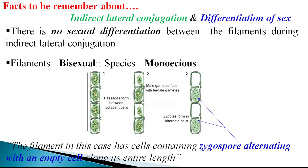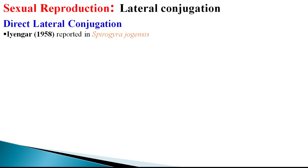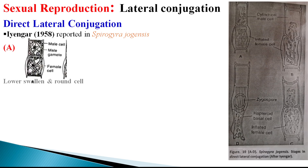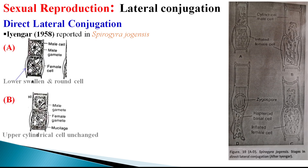Now let's discuss direct lateral conjugation. Professor Ayangar, one of the greatest pioneer workers in Spirogyra research, reported direct lateral conjugation in Spirogyra jogiensis. In this species, filaments are attached to the substrate by basal rhizoidal-like structures. The lower basal cell becomes swollen and rounded, functioning as the female cell, while the uppermost cylindrical male cell remains unchanged.